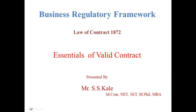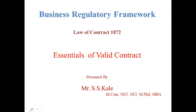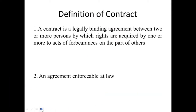Contract manja ka hai? Karar. There are two definitions. First: a contract is a legal binding agreement between two or more persons by which rights are acquired by one or more to act or forbearance on the part of others. Second: an agreement enforceable at law is called a contract.